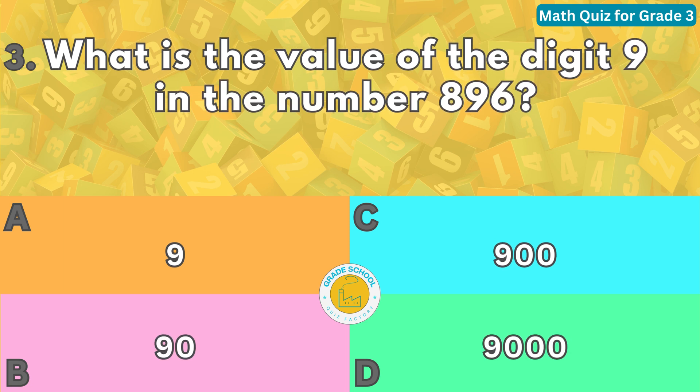Question number three. What is the value of the digit nine in the number 896? The correct answer is letter B.